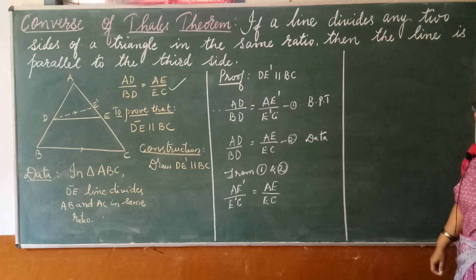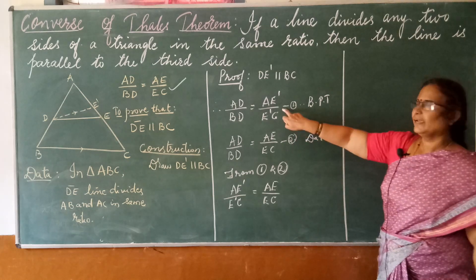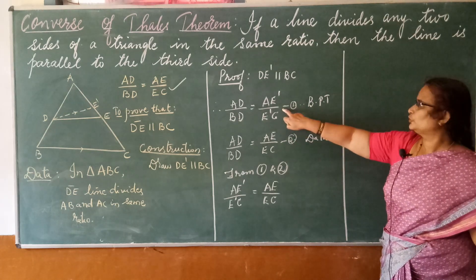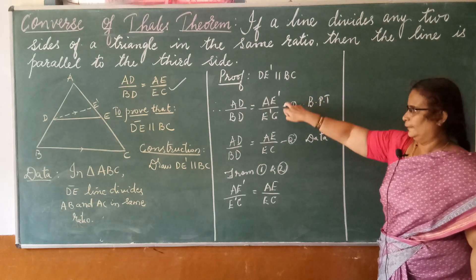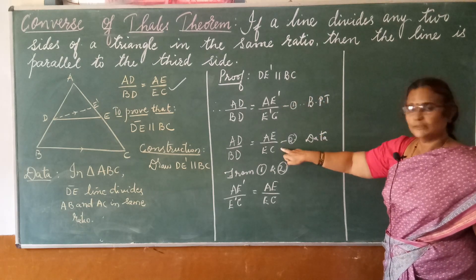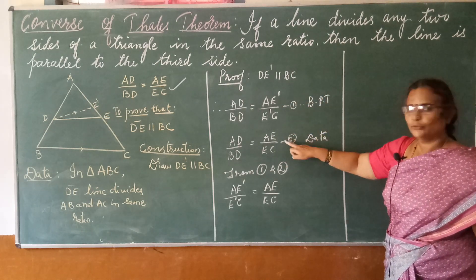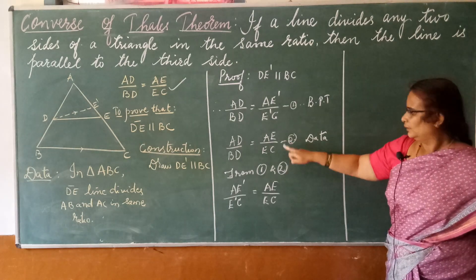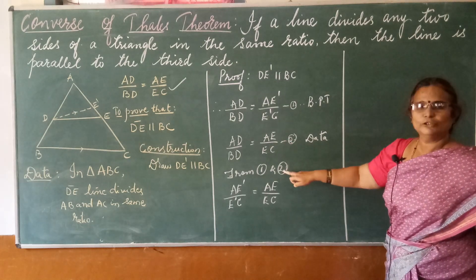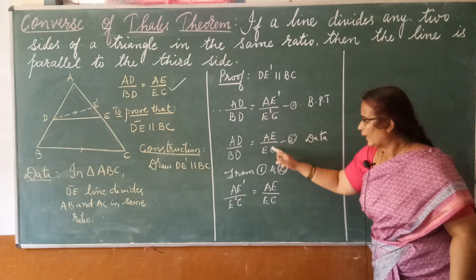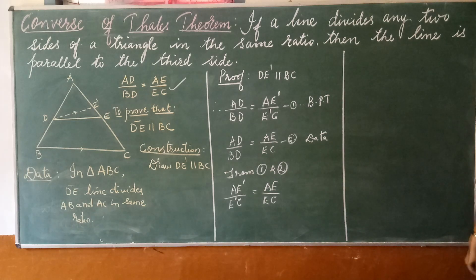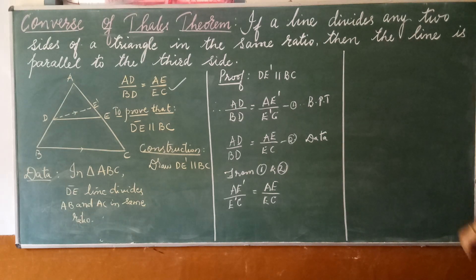This is by the Basic Proportionality Theorem due to construction, and this is by data. Looking at equation 1 and equation 2, the LHS values are equal, therefore the RHS must be equal — things which are equal to the same thing are equal to one another. Therefore AE' by E'C is equal to AE by EC.